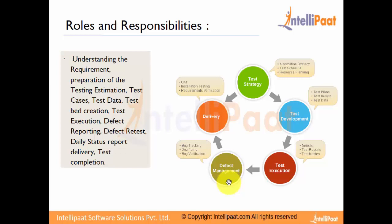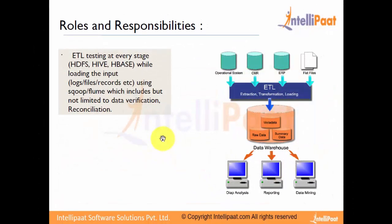Before we deliver the product, we make sure that UAT — user acceptance testing — is completed successfully. We also ensure installation testing and requirement verification are done properly, confirming the product is as per the software requirement specification. These steps are generic; regardless of the testing scenario or approach, we use these phases to test our product and deliver an OK-tested result.